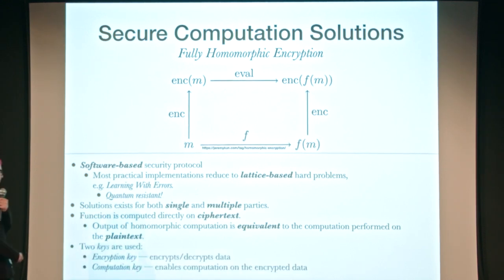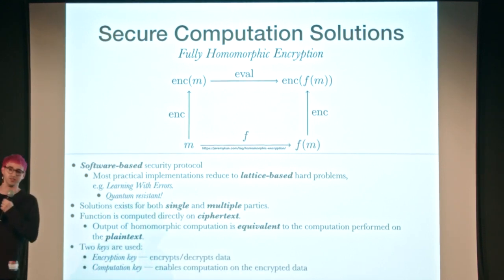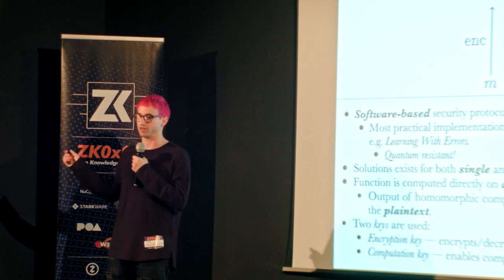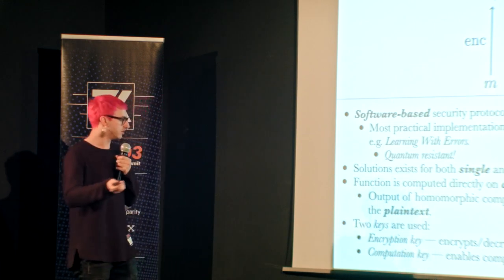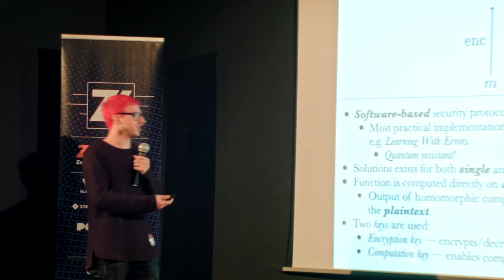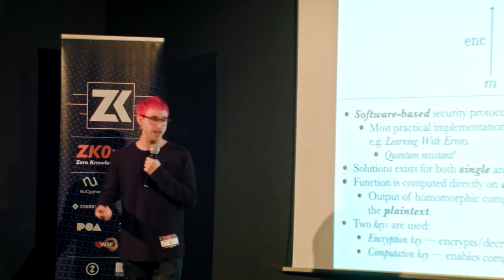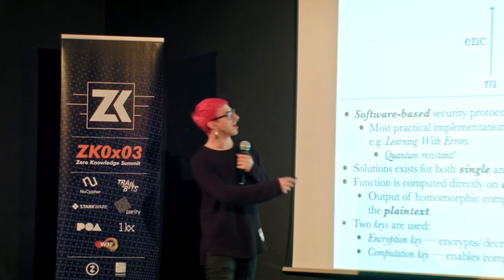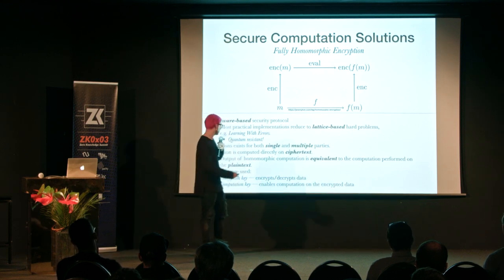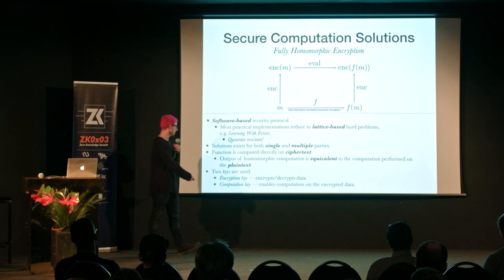There are two keys used in FHE. We have an encryption key, which you use to encrypt and decrypt data — similar to symmetric encryption or public key cryptography. And we have a computation key, which enables the computation on that encrypted data. To actually perform the homomorphic evaluation function, it requires that you know the computation key.